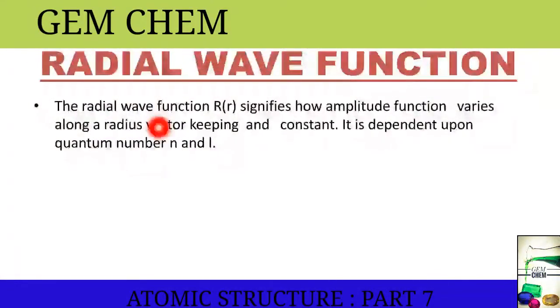Radial Wave Function signifies how amplitude of function R(r) varies along the radius vector. How the amplitude, that is the maximum displacement from the origin, varies along a radius vector, keeping the value of theta and phi constant. So, by keeping the value of theta and phi constant, how R varies, and it is dependent upon n and l.